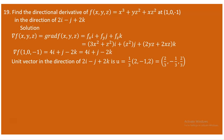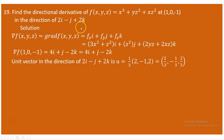Now we determine the unit vector for the given vector 2i - j + 2k. This is not a unit vector, so we must convert it. To change a non-zero vector to a unit vector, we divide the given vector by its magnitude. So 2i - j + 2k is represented by components (2, -1, 2) and we need to find its magnitude.